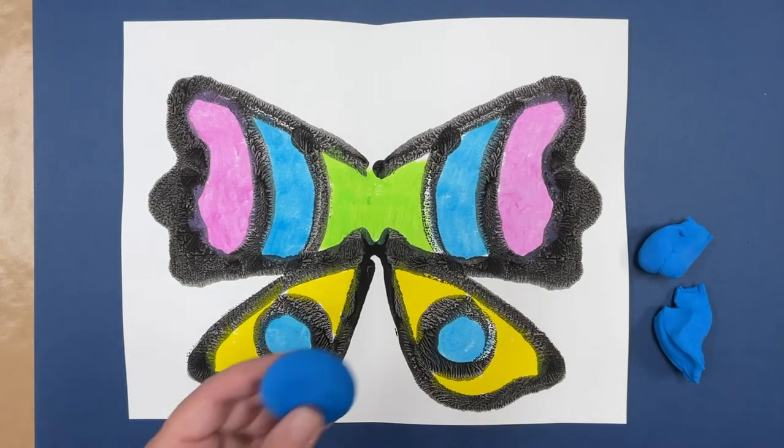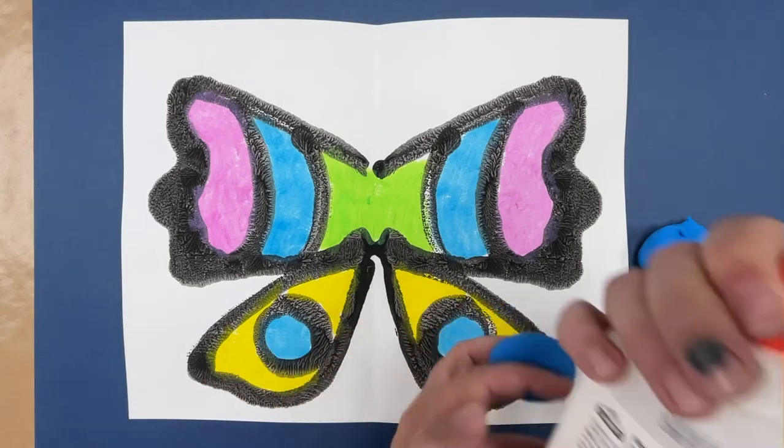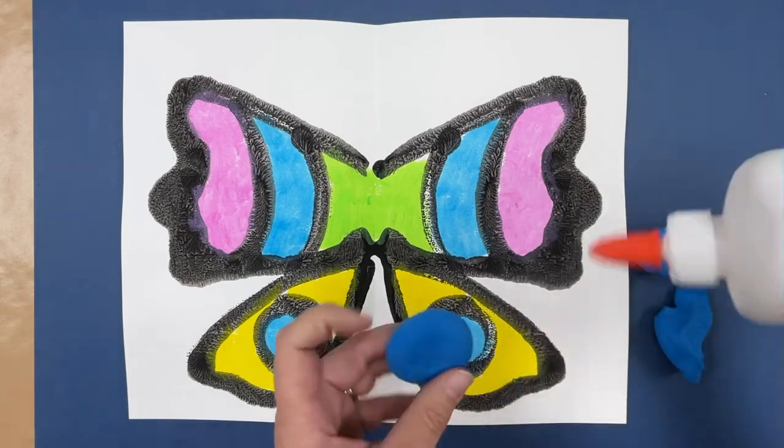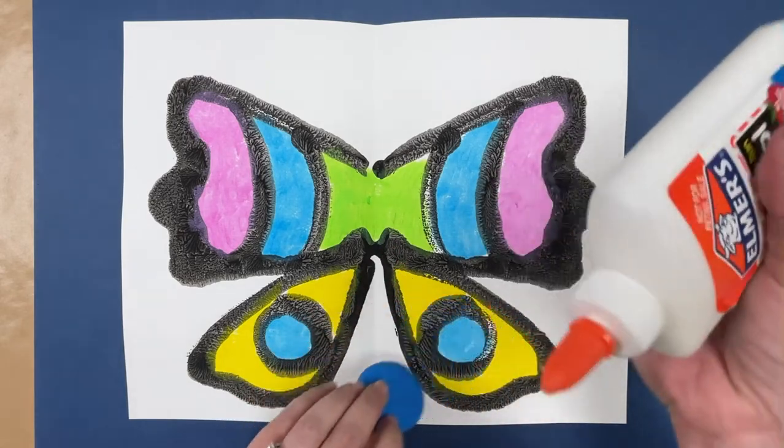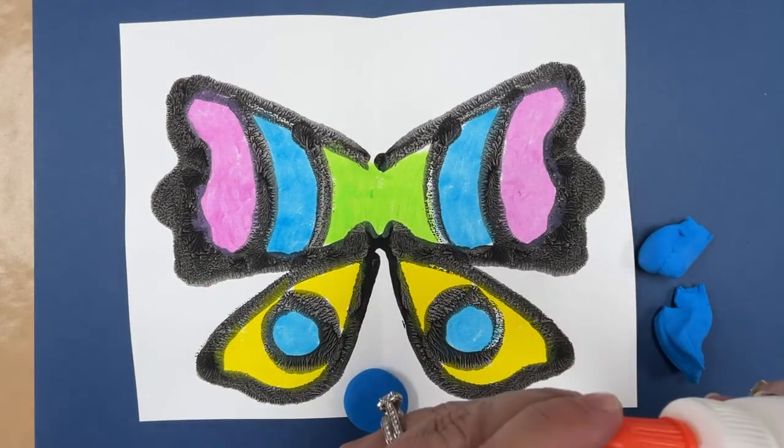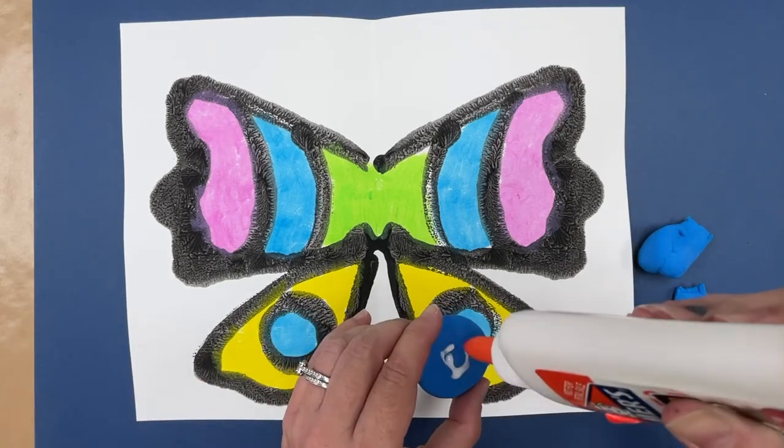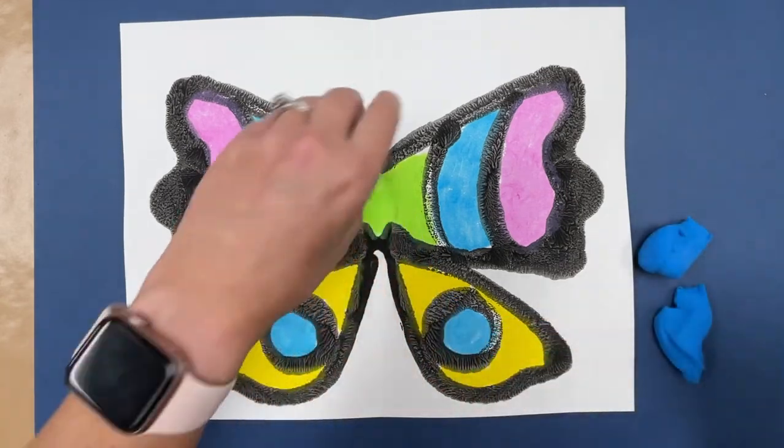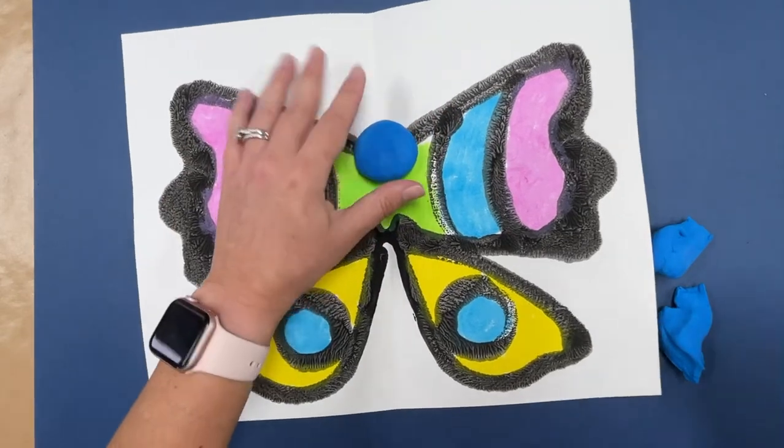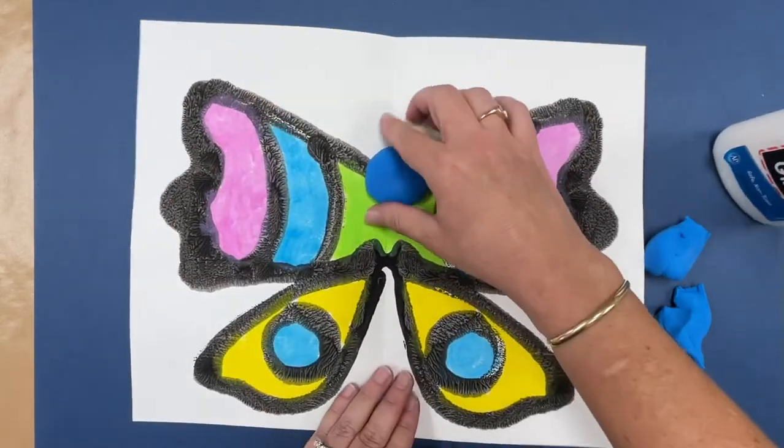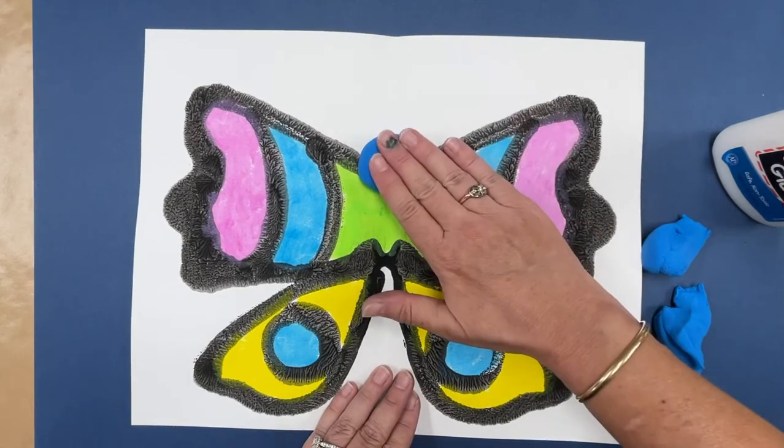So teachers, I'm going to use Elmer's glue which is fine. You could use hot glue if you're doing it for the students. You could use some of your tacky glue. Any of these will work. So I'm going to put some glue on the back of it and glue that down. Come up just a little bit.